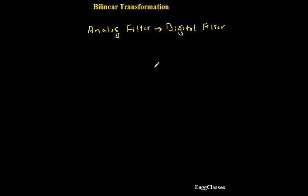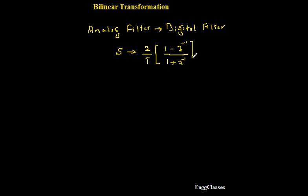Bilinear transformation converts analog to digital. How does that conversion happen? Say for example, I can design an analog filter using a Butterworth filter or Chebyshev filter. Towards the end I am going to get a transfer function H(s). To move into the digital domain, in that H(s) I need to substitute every S with this transformation: 2/T × (1 − z⁻¹) / (1 + z⁻¹). If I do this transformation, the analog filter gets converted into a digital filter. This is what the bilinear transformation is.